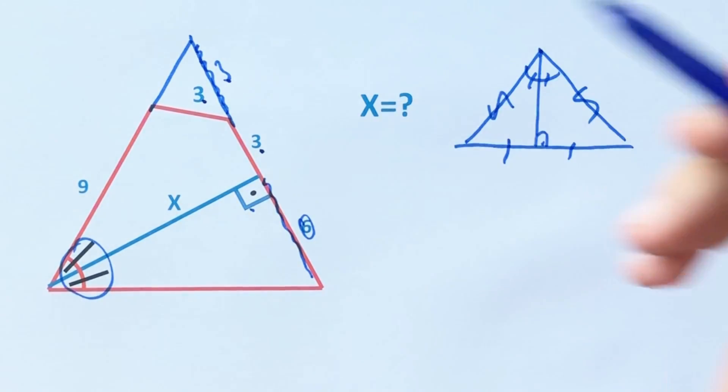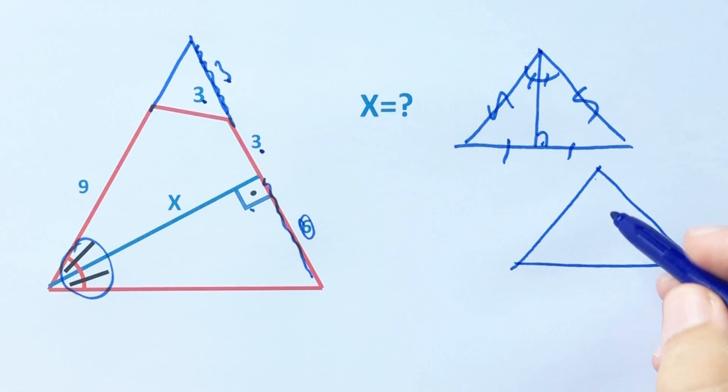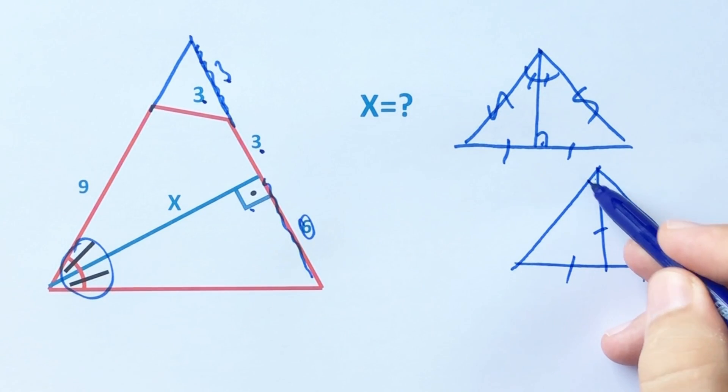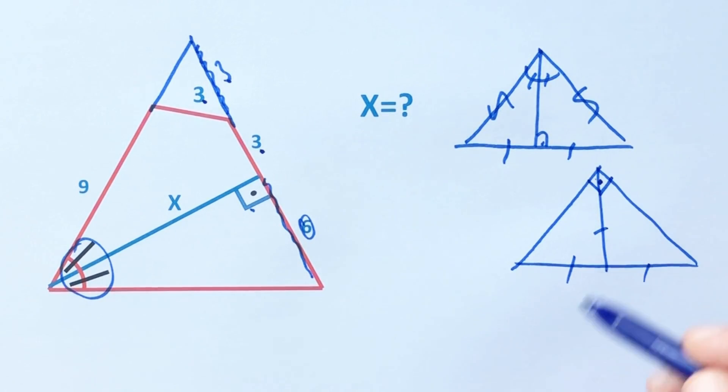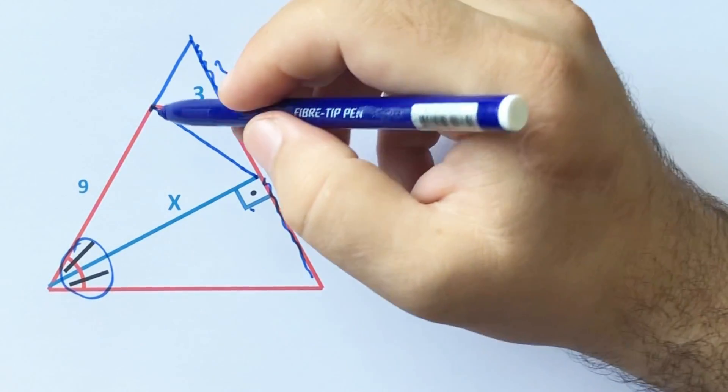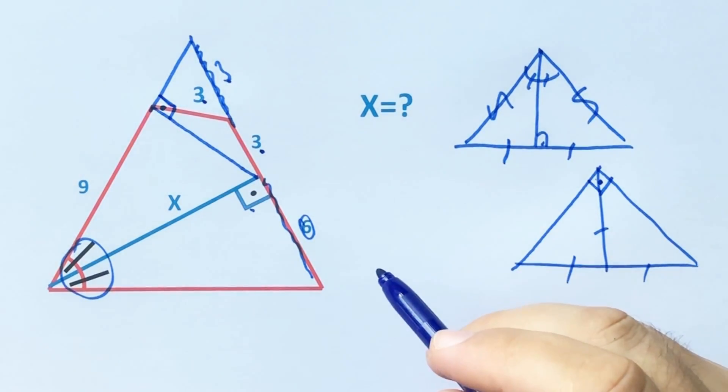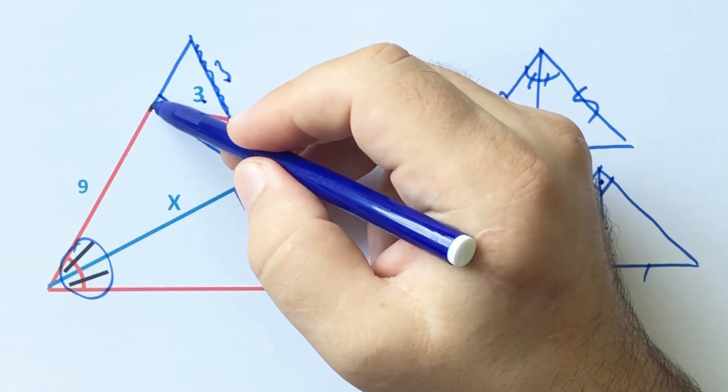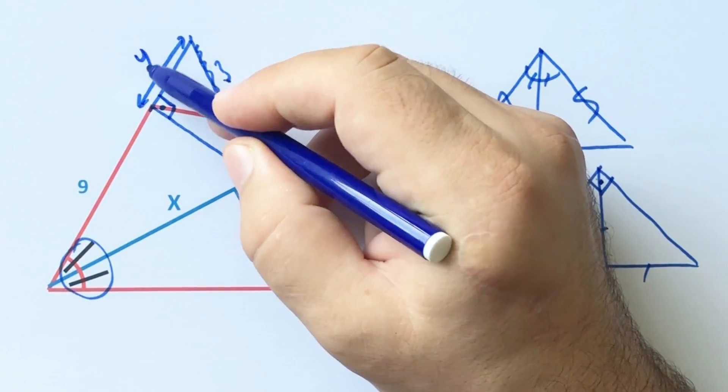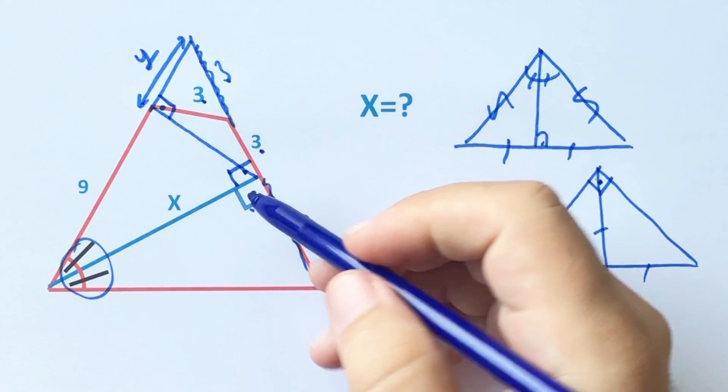Notice that we get three equal parts. Let's remind you again, if we have three equal parts, this angle must be 90 degrees. That means if we extend here, this angle must be 90 degrees. Let's call here y units, and we know that here is 90 degrees.